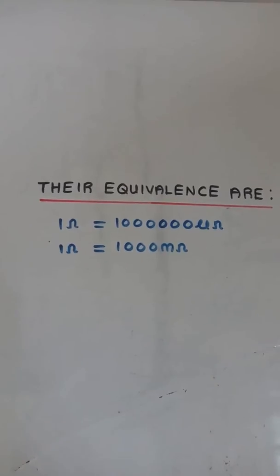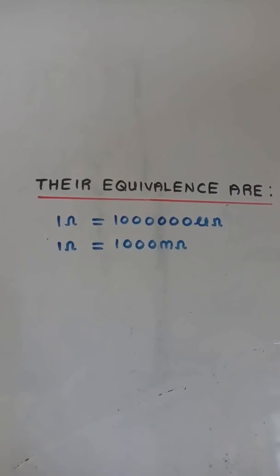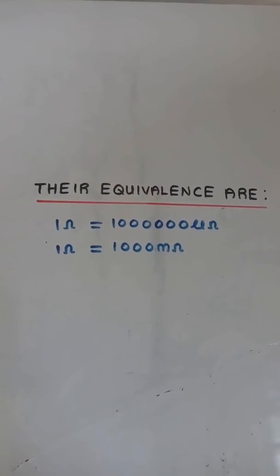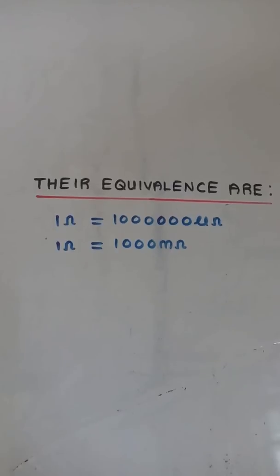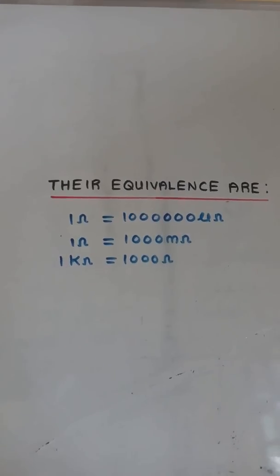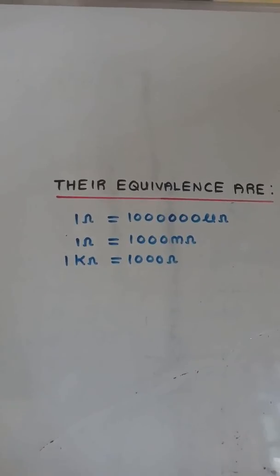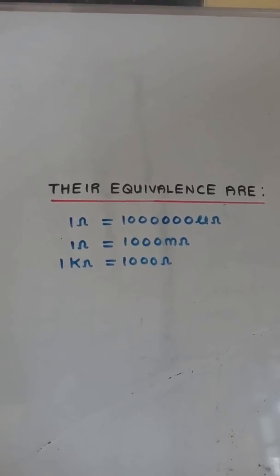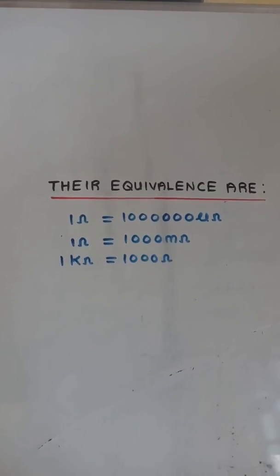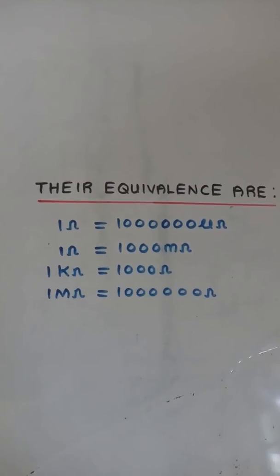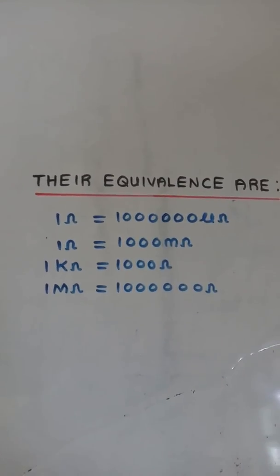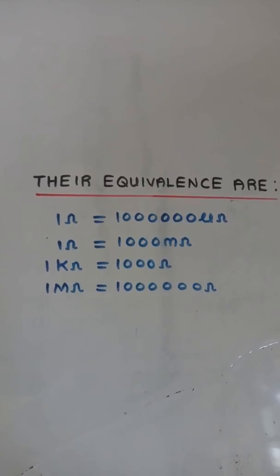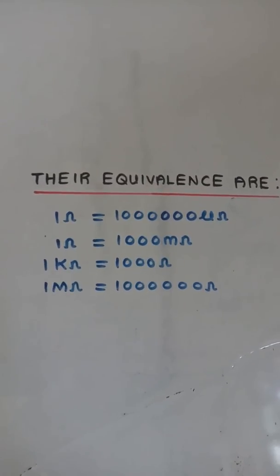1 ohm is equal to 1,000 milli-ohms. 1 kilo-ohm is equal to 1,000 ohms. 1 mega-ohm is equal to 1 million ohms.